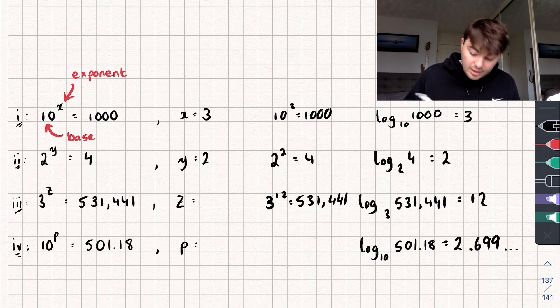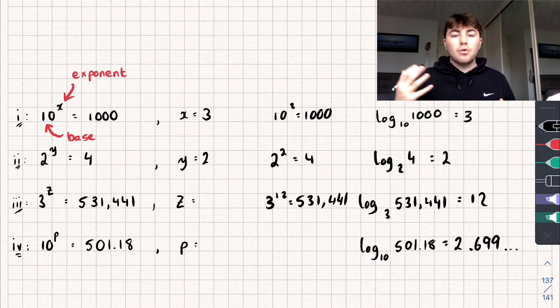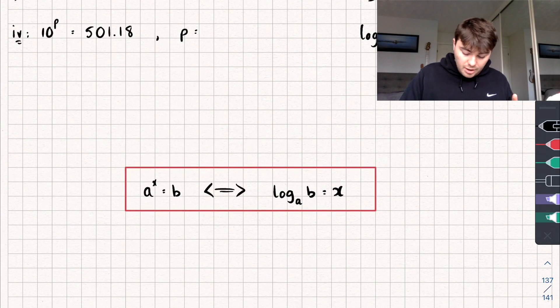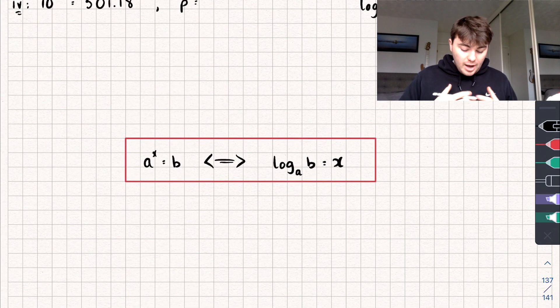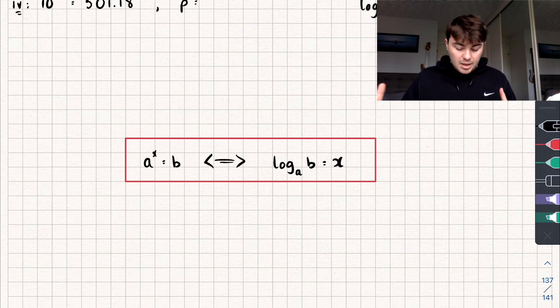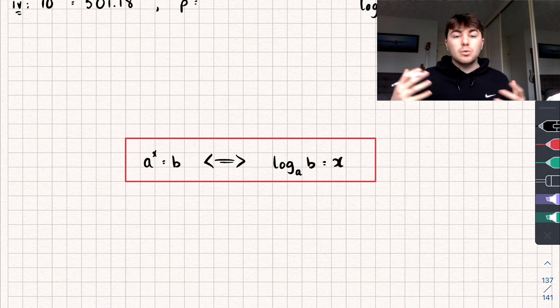That's what logarithms are. If I write it in a more general way, we can write it like this: if I've got a to the power of x equal to b, well then that means that the logarithm of b in base a is equal to x.